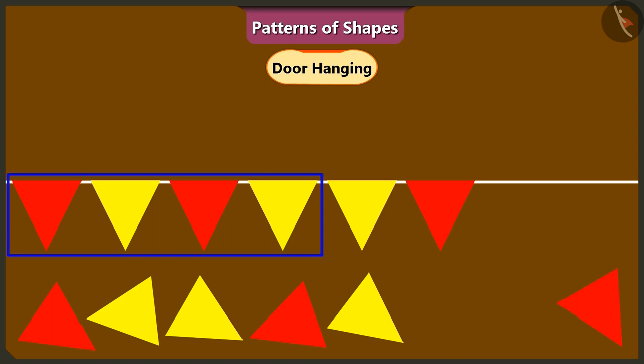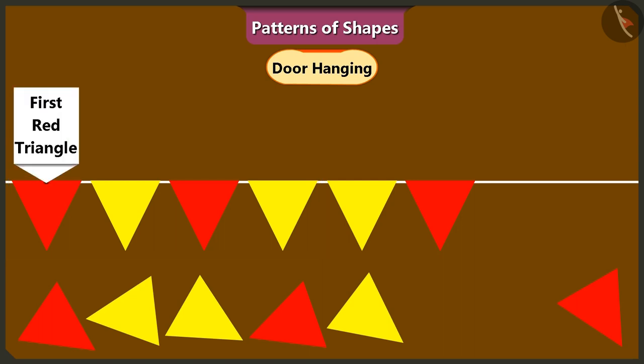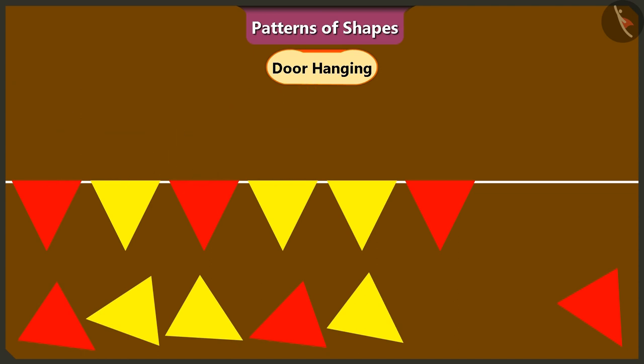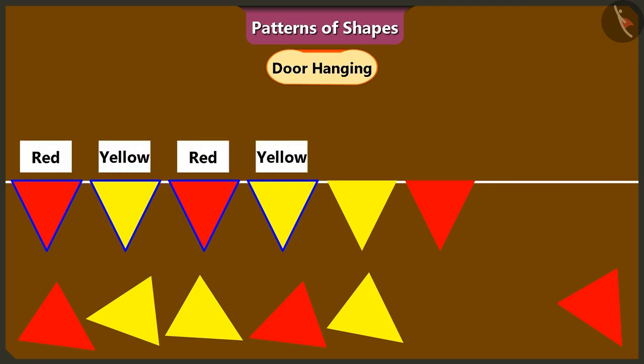Yes, ma'am. In this toran, first triangle is red and the second triangle is yellow in color. Yes, the third triangle is red in color and the fourth triangle is yellow in color. Both of you are correct. Children, all the shapes in this toran are triangles. Keep in mind the colors of the triangles and repeat the color pattern while making this door hanging or toran. Okay, ma'am. We have understood.